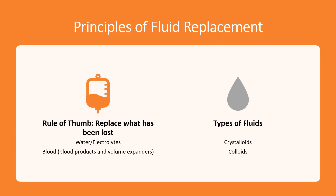When talking about how we replace fluid, the rule of thumb is to replace what's been lost. If you've lost water and electrolytes — say through diarrhea or dehydration from heat-related problems — then you replace water and electrolytes. If you lose blood, you replace blood with blood products and volume expanders. There are two types of fluids: crystalloids and colloids.